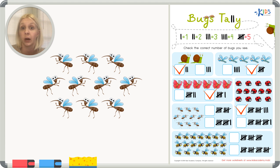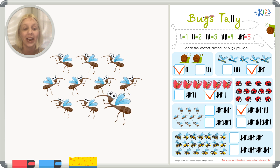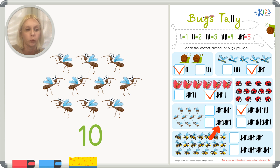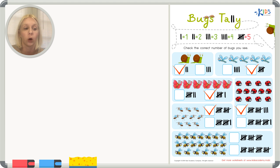Now we've got mosquitoes — I don't like mosquitoes! Let's count: one, two, three, four, five, six, seven, eight, nine, ten. Ten is two groups of five: five, ten. Let's find that — one group of five and two groups of five, so this is ten. And this is one group of five, which is five plus one equals eleven. We said ten mosquitoes, so we put the check right here.